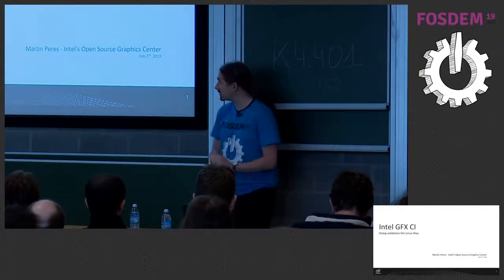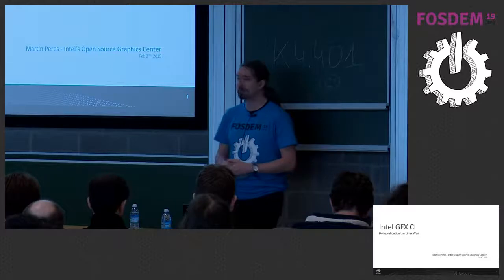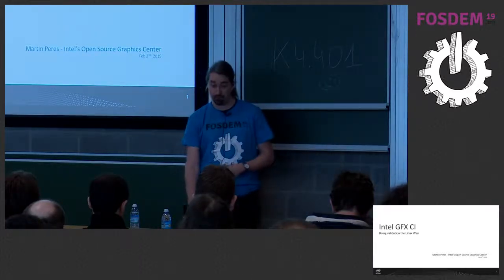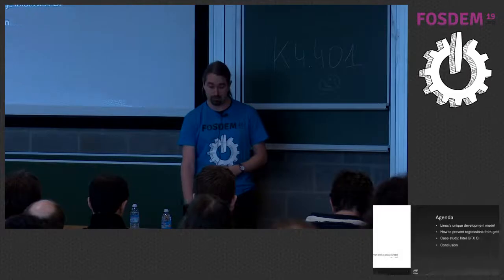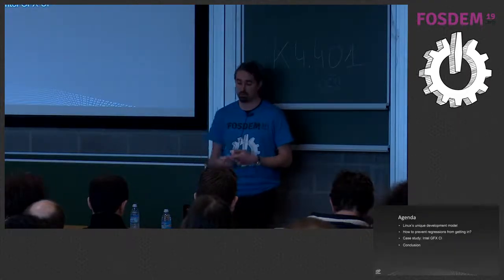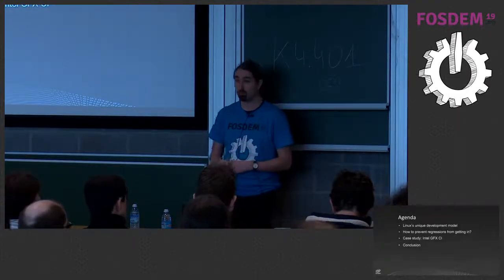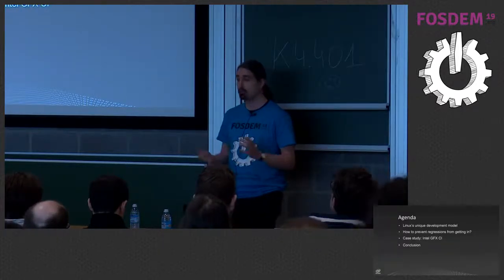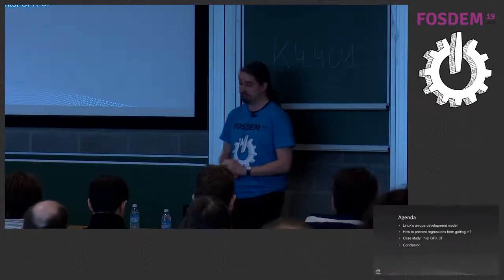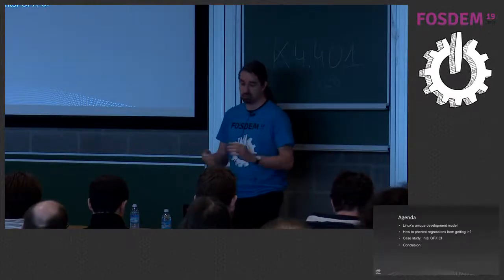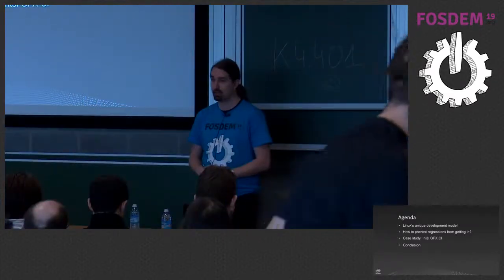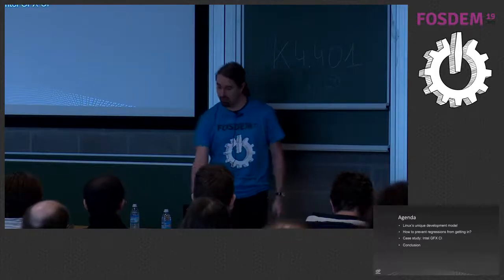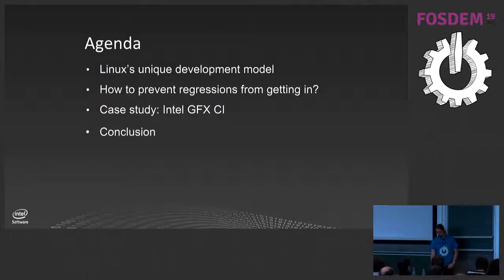As the title says, we're going to see how we can do validation the Linux way. First, we need to know what the Linux way actually is, so we're going to go through the unique development model of Linux, then how regressions get in and how to prevent that. We'll use Intel Graphics CI as a case study because it really is different from other solutions. Then a quick conclusion.